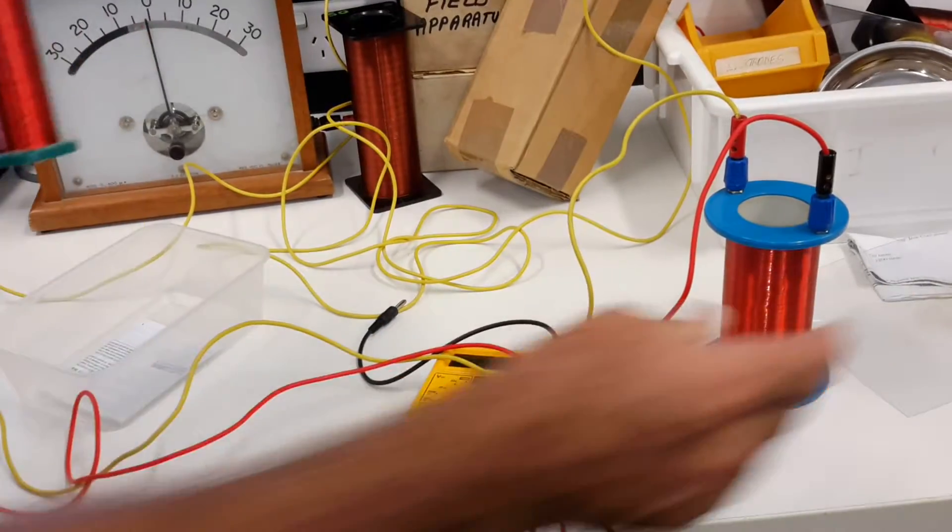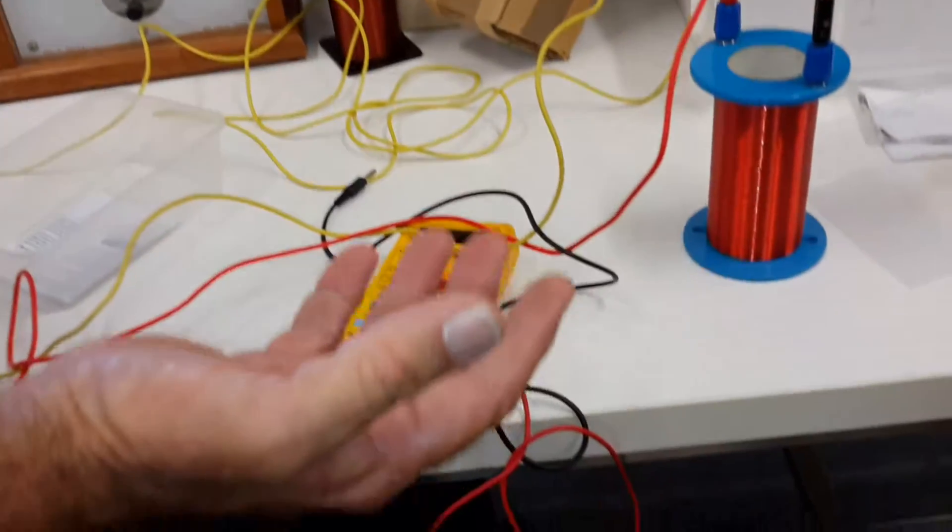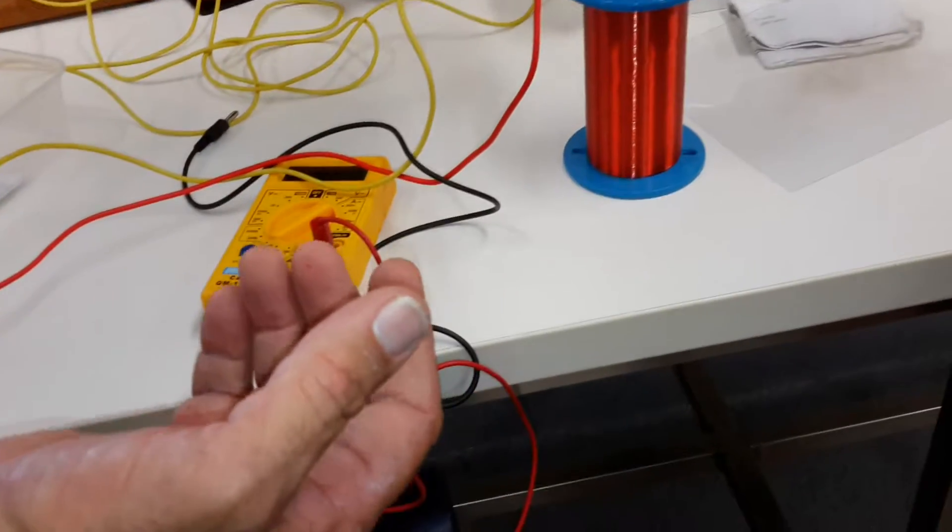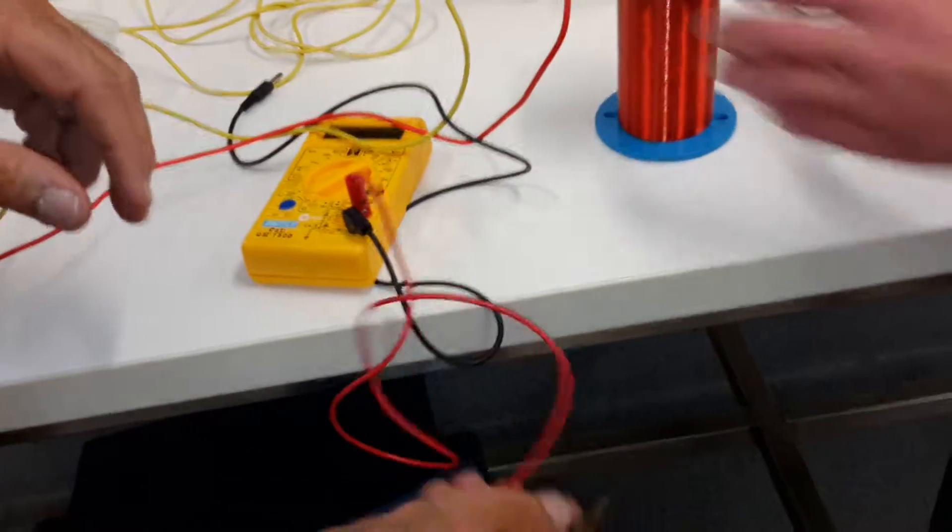So we're now making that the primary coil. The primary coil means voltage in, and here we'll have voltage out. Let's just see what we get.